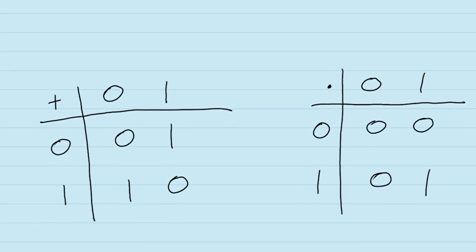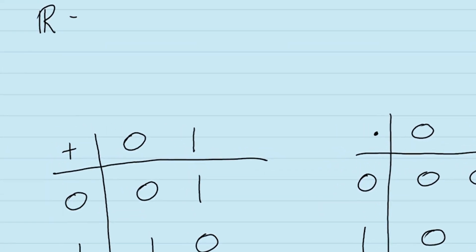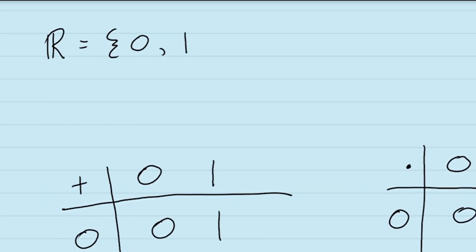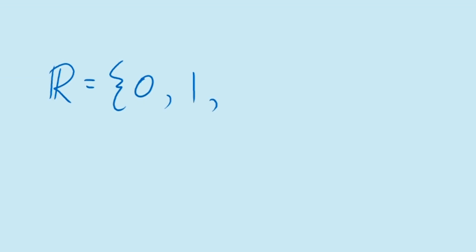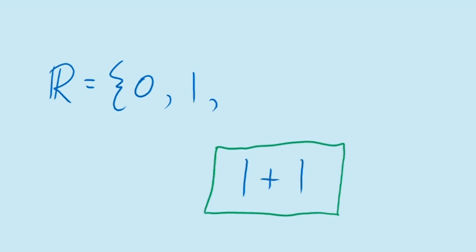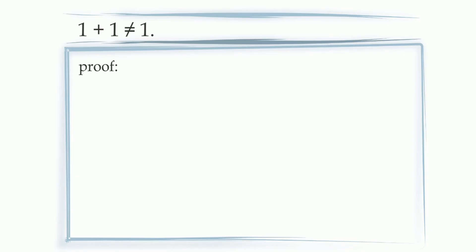The question is, how do we know that the real numbers are not this number system? In order to prove that there are more than just two real numbers, what we're going to do is show that the number 1 plus 1 is a new real number, meaning it's not 0 and it's not 1. And we're going to do this in two propositions.